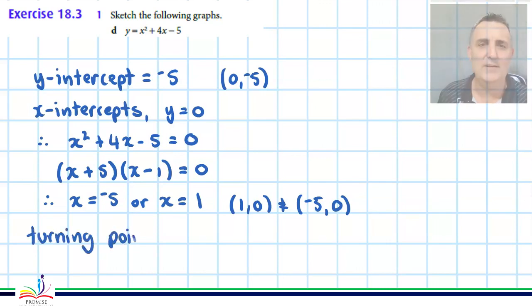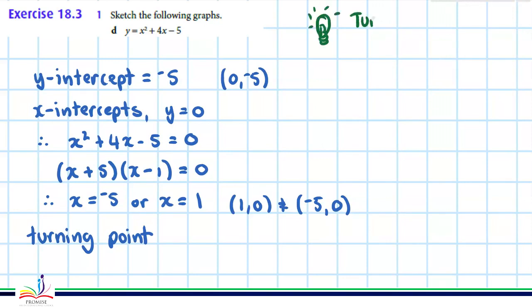At this point, we want to find the turning point, and there's really two ways you can do that. Because you know the quadratic is symmetrical, halfway between the roots is going to be the x-value of the turning point.